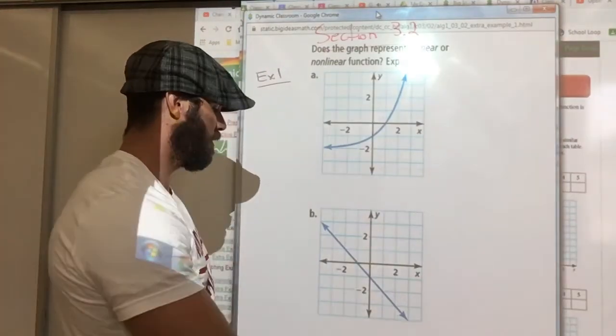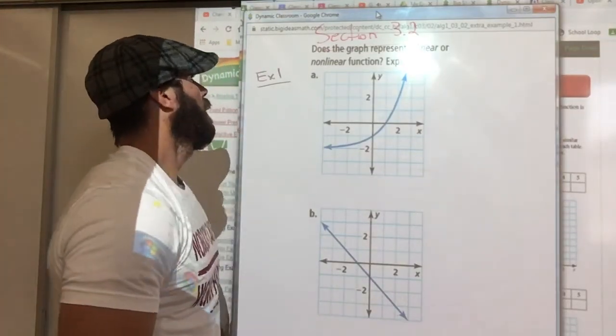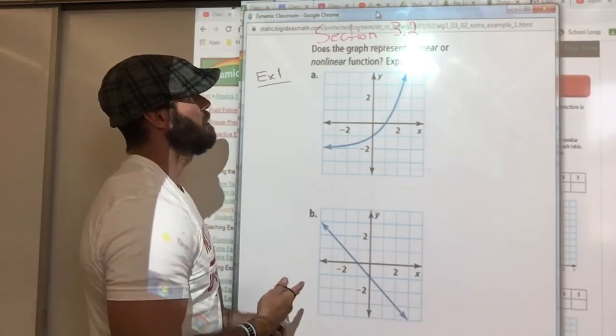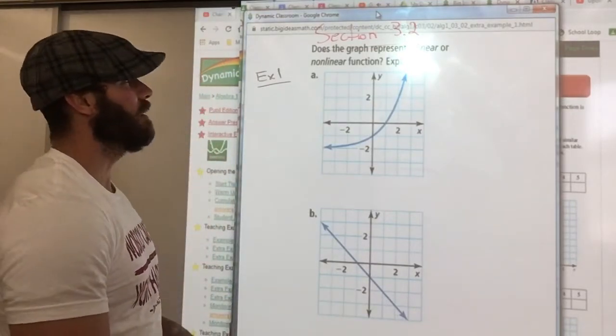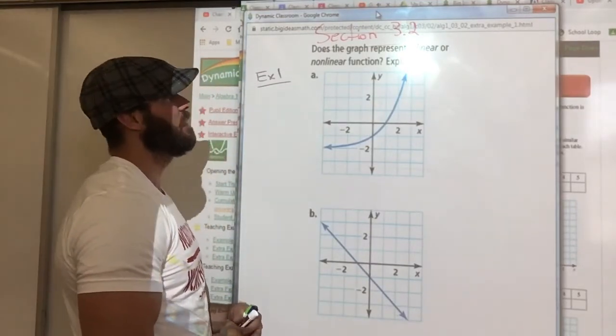Now we are in section 3.2, Example 1. Does the graph represent a linear or nonlinear function? Explain.